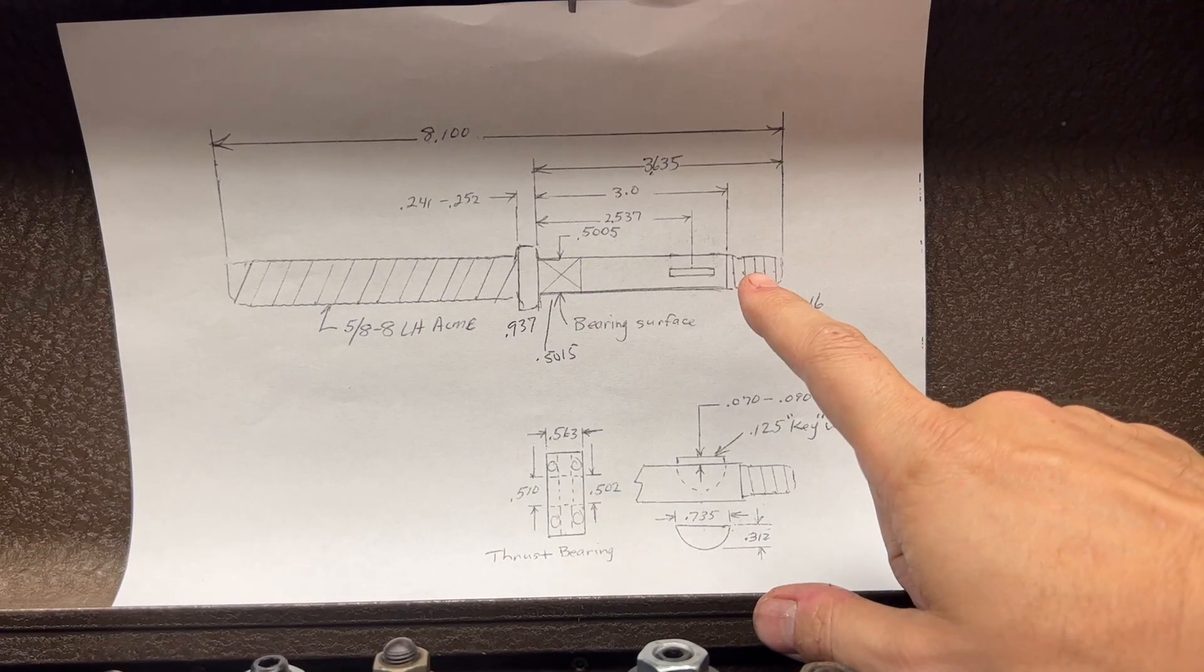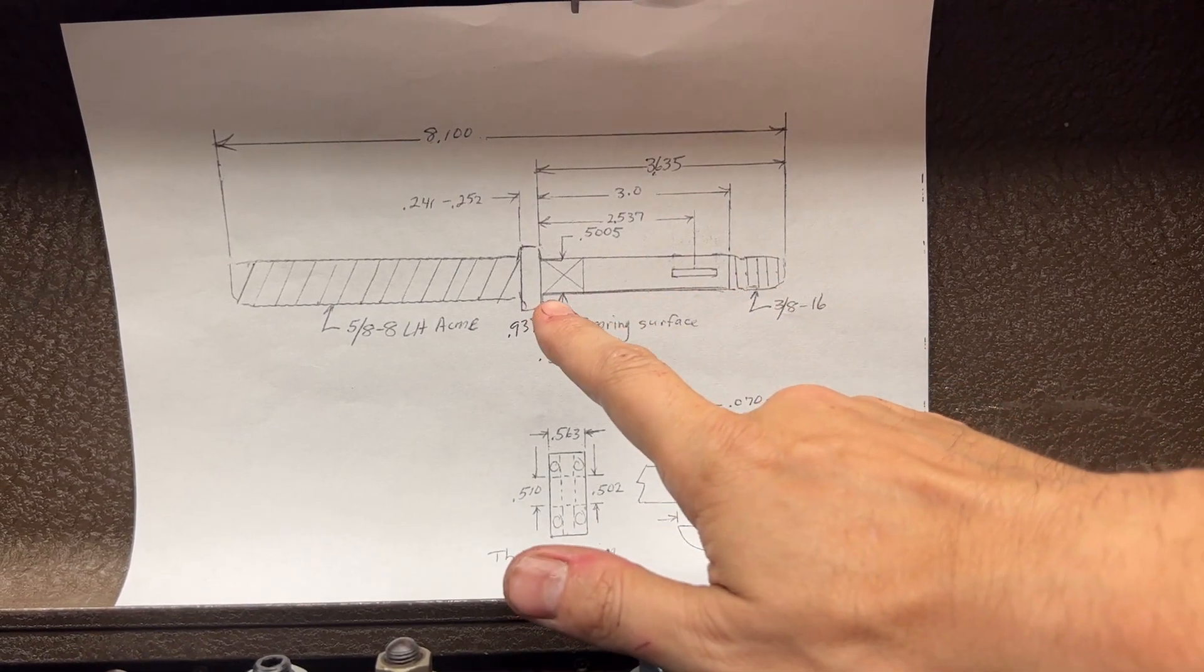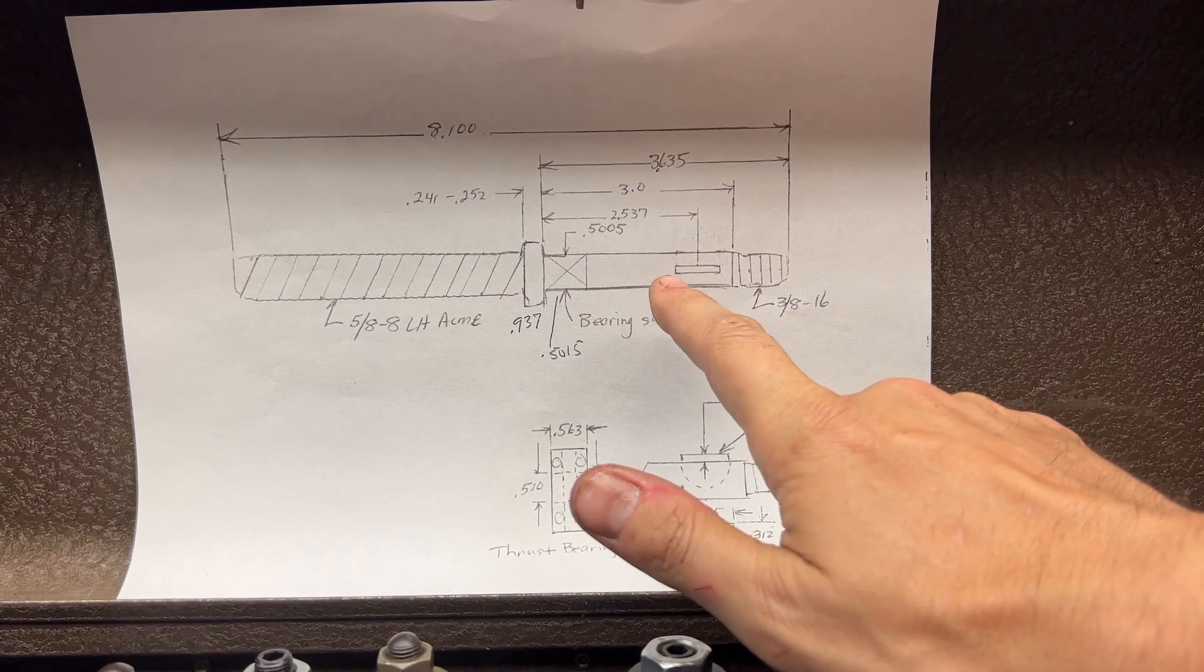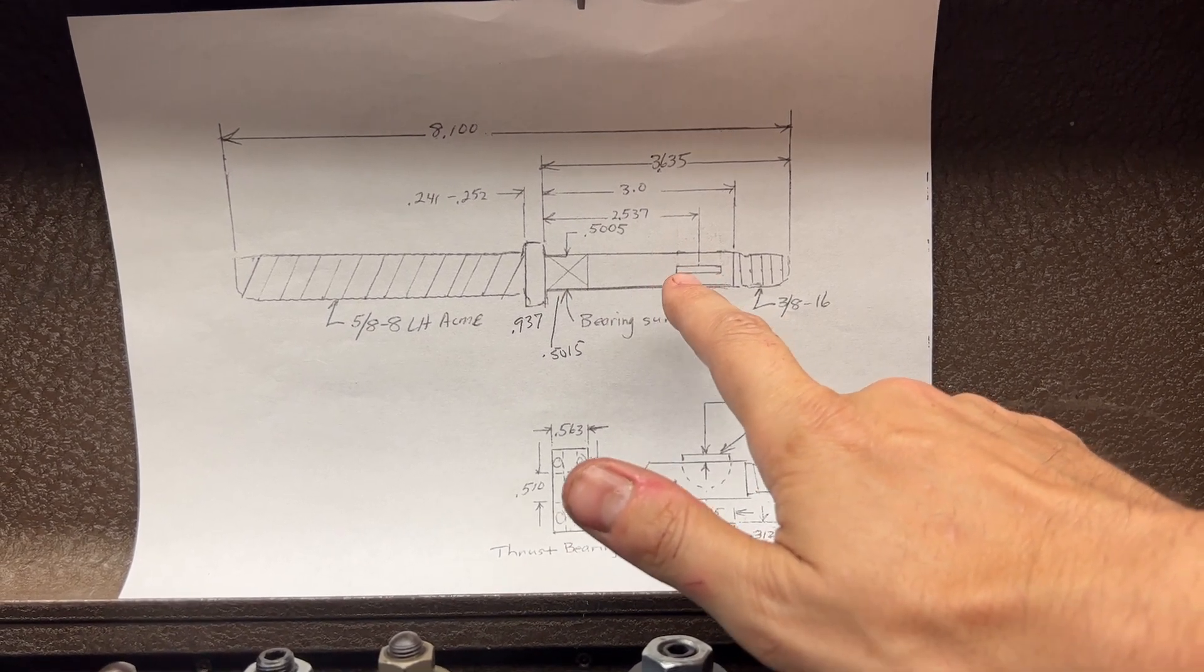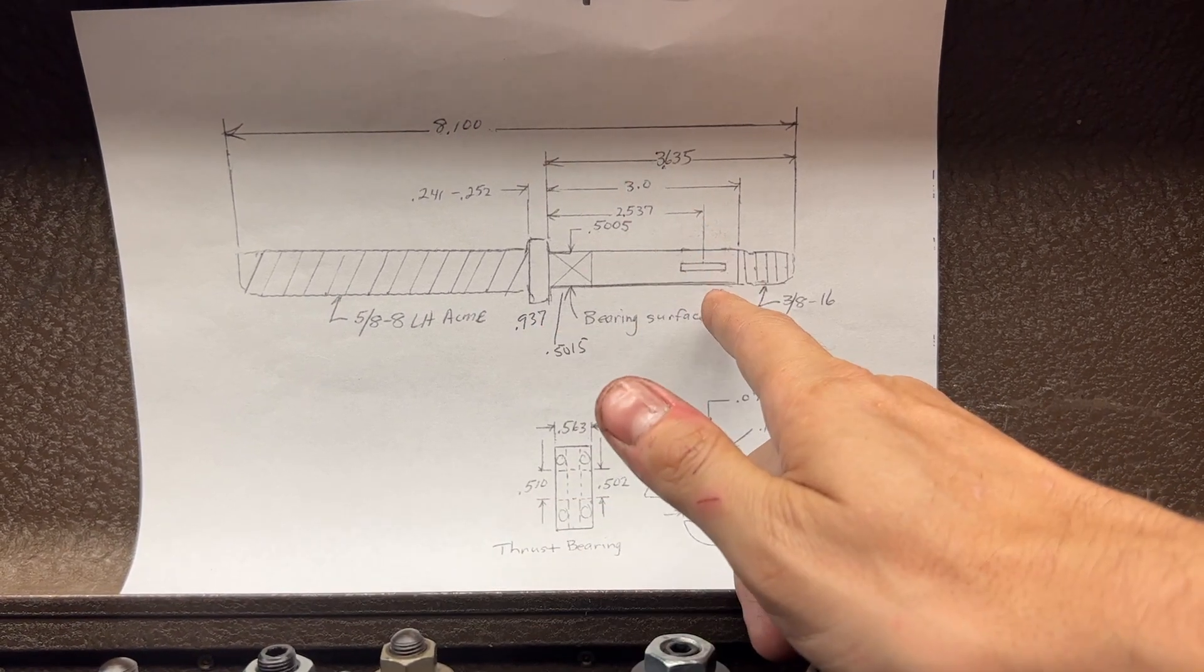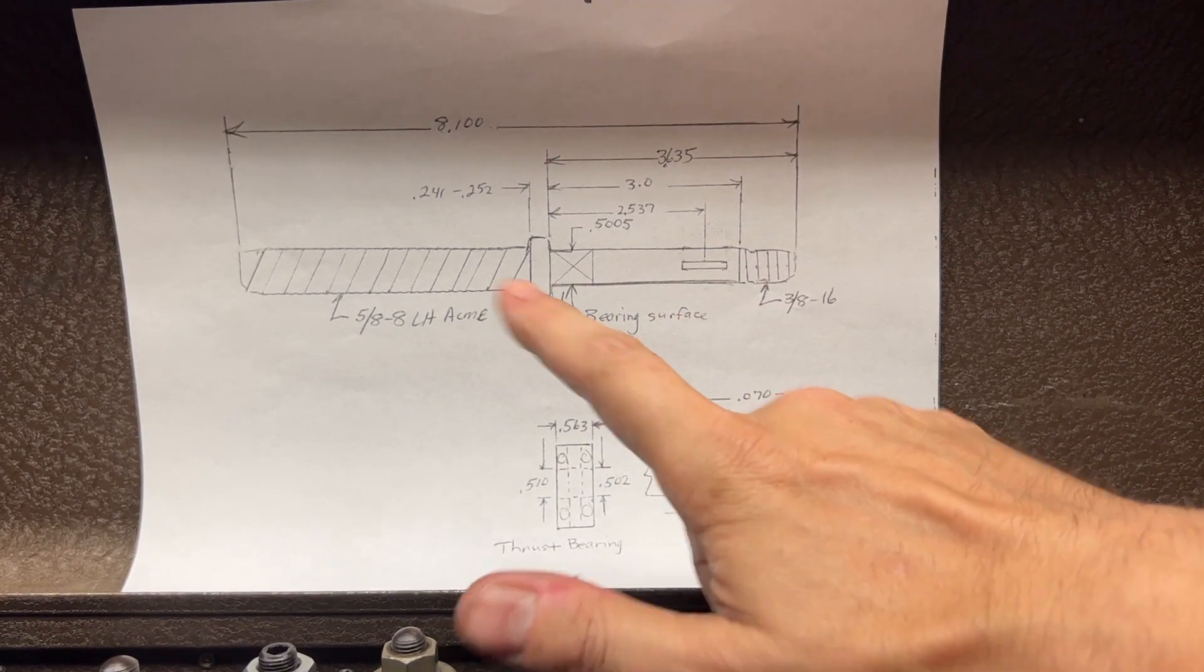I think the first thing I want to work on is this section here up to this shoulder. This is going to give us a nice smooth surface to hold on to and reference off of when we flip this thing around in the chuck and work on this Acme thread.